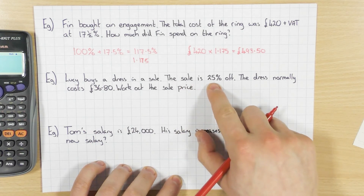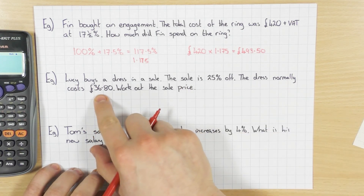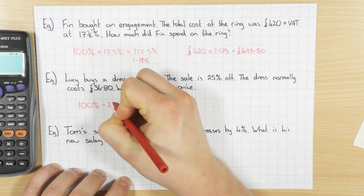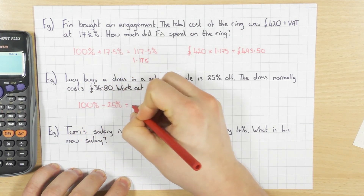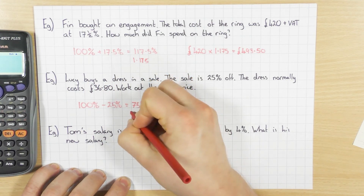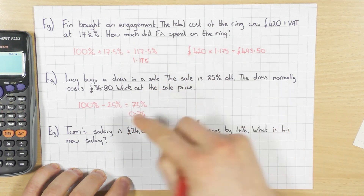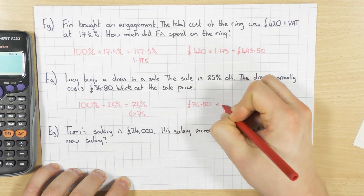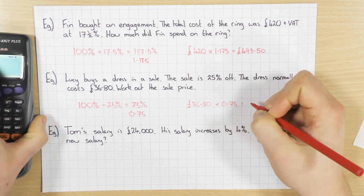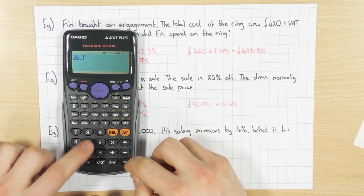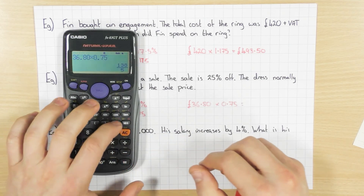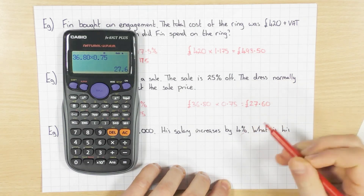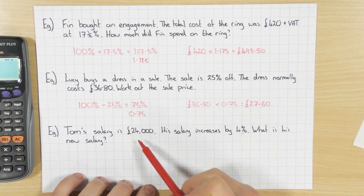Lucy buys a dress in a sale. The sale is 25% off. The dress normally costs £36.80. Work out the sale price. This is a decrease, so 100% take away 25% leaves me with 75%. As a decimal: 0.75. The dress normally costs £36.80, so I times that by 0.75 and we get £27.60.